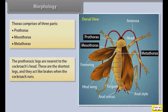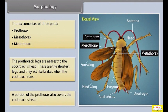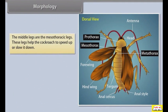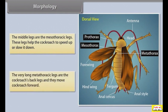The prothorax legs are nearest to the cockroach's head. These are the shortest legs and act like brakes when the cockroach runs. A portion of the prothorax also covers the cockroach's head. The middle mesothorax legs help the cockroach to speed up or slow down. The very long metathorax legs are the back legs and move the cockroach forward.